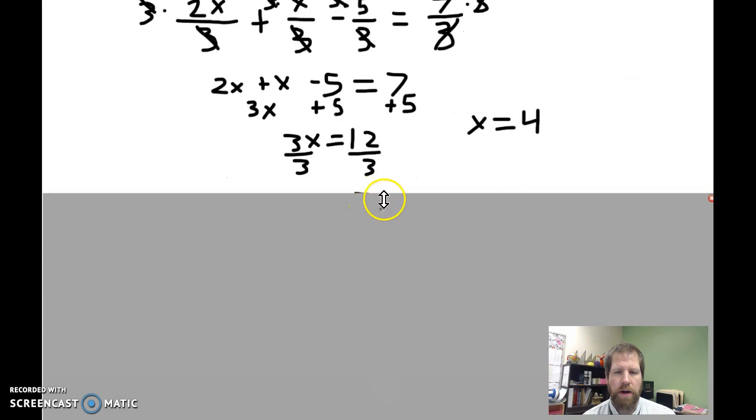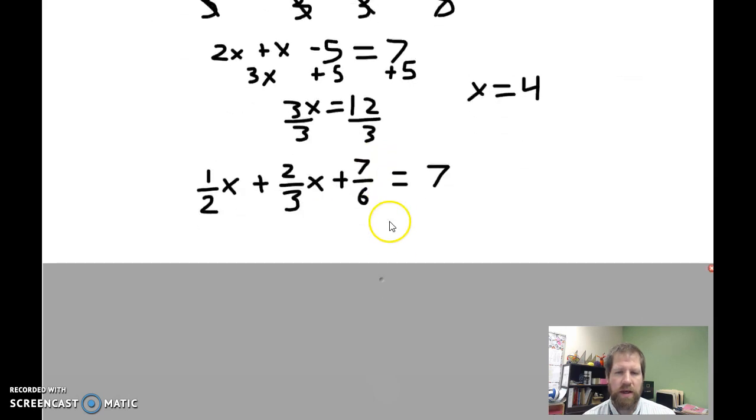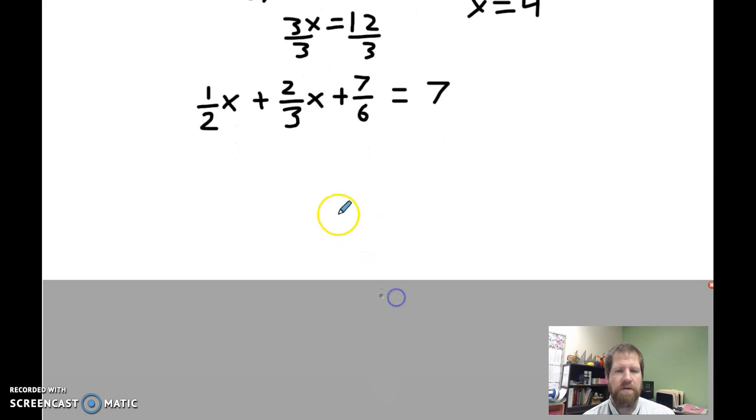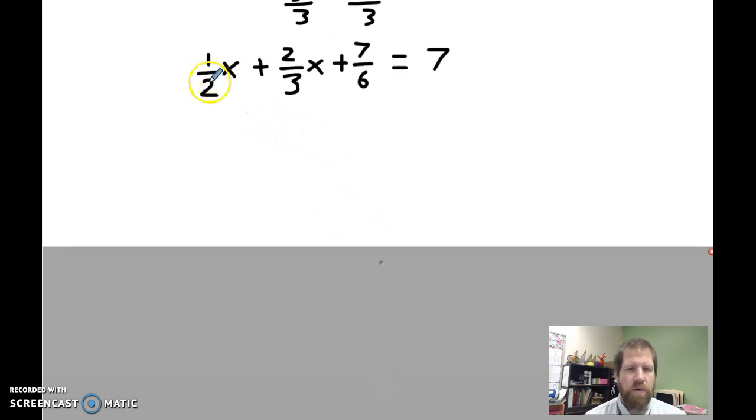Let's look at another one that doesn't have the exact same denominator for all of them. So I have 1 half x plus 2 thirds x plus 7 sixths equals 7. The first thing I'm going to do is I'm going to put that over 1, just so it's easier for me to see that this is a fraction with a denominator of 1. And now I've got to find the least common denominator.